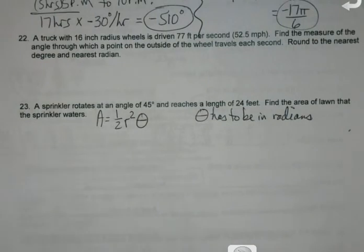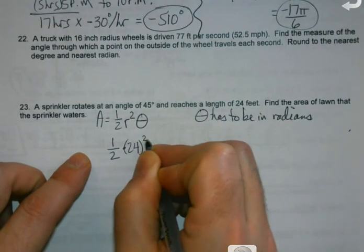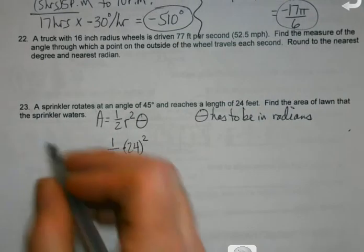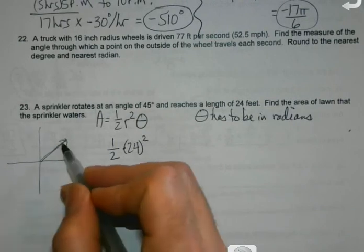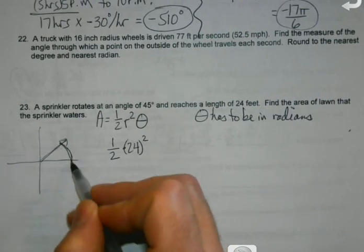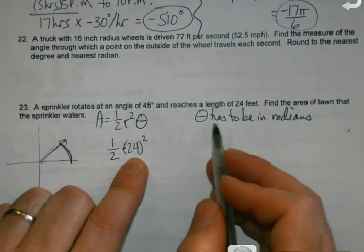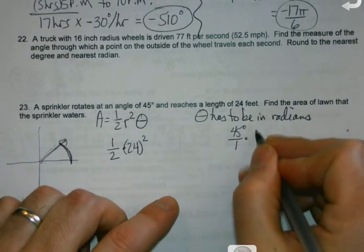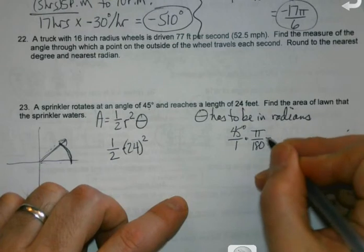So what do I know so far? I know the length of my radius, because when you think about a sprinkler, if you were to draw a picture with a 45 degree angle, it's just going to keep back and forth here. So that 24 is going to end up being my radius. When I'm trying to get my 45 degrees into radians, it's just like what we just did up above. 45 times pi over 180.